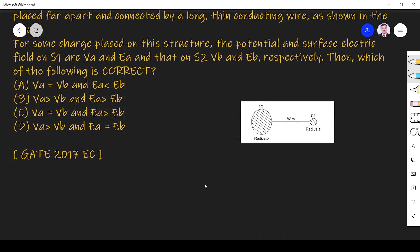What they are telling, they have kept some charges because of that it has electric field of EB, potential VB and this sphere has electric field of EA, potential of VA right. So they ask which of the following is correct.